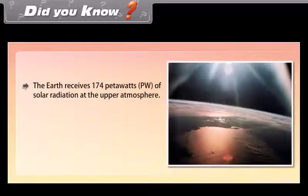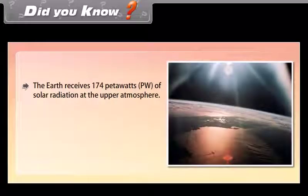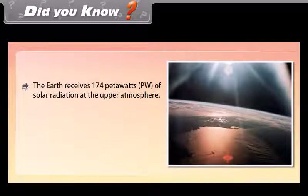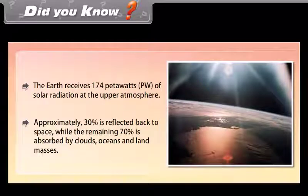Did you know? The earth receives 174 petawatts of solar radiation at the upper atmosphere. Approximately 30% is reflected back to space, while the remaining 70% is absorbed by clouds, oceans, and land masses.